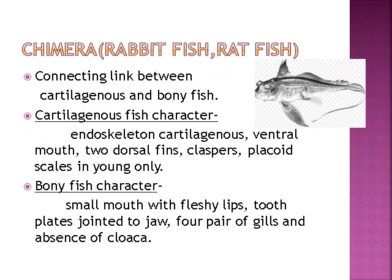Chimera, also called rabbit fish or rat fish, is the connecting link between cartilaginous and bony fish. Cartilaginous fish characters: the endoskeleton is cartilaginous, ventral mouth, two dorsal fins, presence of claspers, and placoid scales present in young only. Bony fish characters: small mouth with fleshy lips, tooth plates jointed to jaw, four pairs of gills and absence of cloaca.